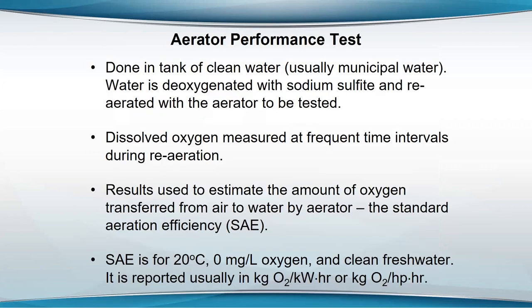The aerator performance test — to see how efficient these aerators are — is done in a tank of clean water, usually tap water. You deoxygenate the water with sodium sulfide, then re-aerate it with the aerator being tested. You measure the dissolved oxygen concentration over time while the aerator re-aerates the water in that tank.